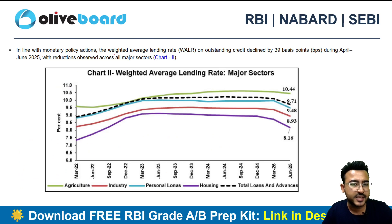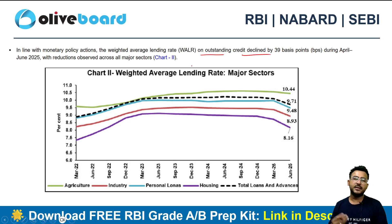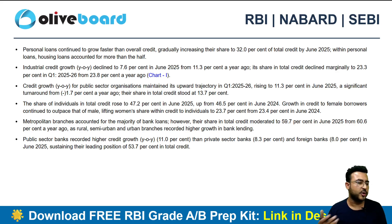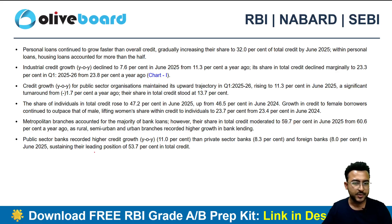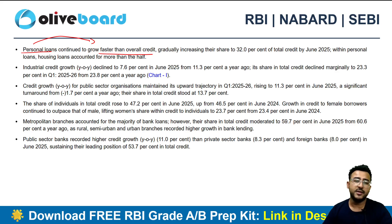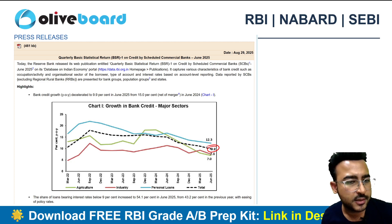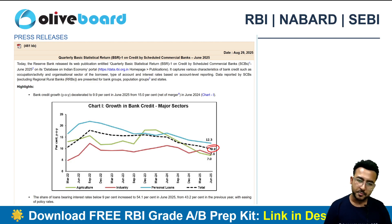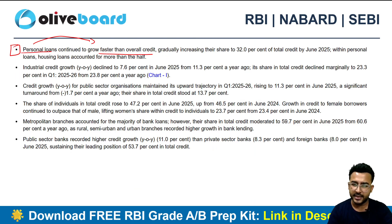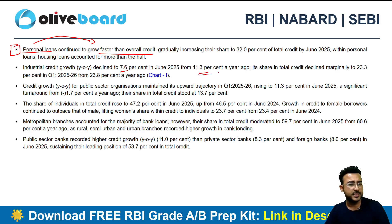This data was recently published on 29th August. Additionally, the weighted average lending rate (WALR) on outstanding credit declined by 39 basis points. Personal loans continue to grow faster than overall credit. Key data to remember: overall credit is 9.9% year-on-year, down from close to 15% earlier. Industrial credit growth has declined to 7.6% from 11.3% earlier.